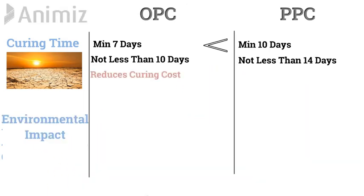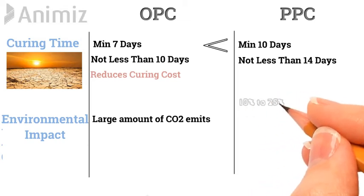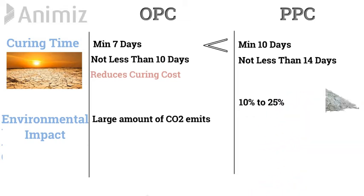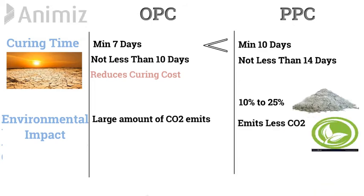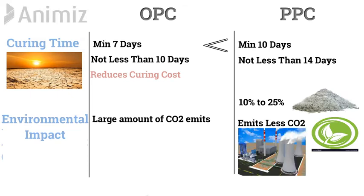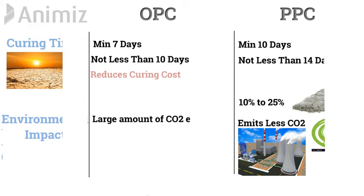Environmental Impact: During the manufacturing process of OPC, a large amount of CO2 is released. Whereas, PPC contains 10–25% pozzolanic material, hence it emits less CO2 during the manufacturing process. PPC is called environment-friendly as it utilizes byproducts of thermal stations, thus reducing environmental problems.